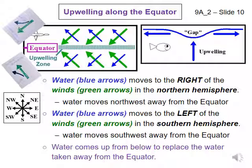Putting these two deductions together: north of the equator, water is pushed northwest; south of the equator, water is pushed southwest. Therefore, water is being pushed away from the equator. Sea level drops more and more at the equator as more and more water is taken away. Eventually, the gap in the surface of the ocean is large enough that water starts coming up from below to fill in the gap and replace the water being taken away by the winds.